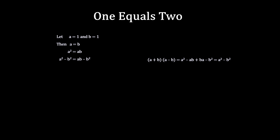We can factor a squared minus b squared into a plus b times a minus b on the left-hand side of the equation, and a b minus b squared into b times a minus b on the right side of the equation.